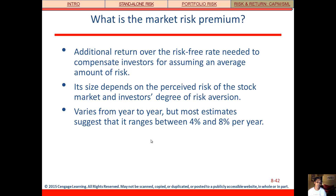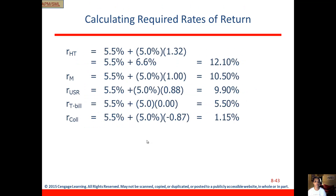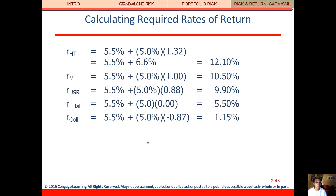Market risk premiums tend to hover closer to 4% than 8%. Required rates of return are based on CAPM: risk-free rate plus market risk premium times beta. The market risk premium stays at 5% for everyone, since it's the market return minus the risk-free rate. Beta is the only thing that changes across all five calculations, driving the required return based on each stock's riskiness.